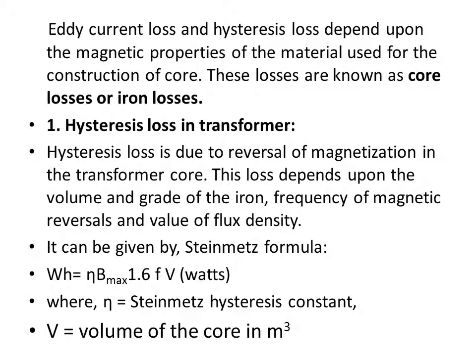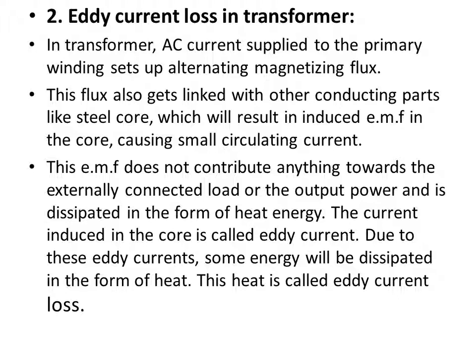Hysteresis loss is due to the reversal of magnetization in the transformer core. This loss depends upon the volume and grade of iron, frequency of magnetic reversal, and the value of flux density. The equation is: Wh = Kh Bmax^1.6 × f × V, where f is the frequency of magnetic reversal, V is the volume of the core, and Bmax is the maximum flux density.